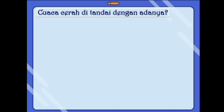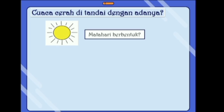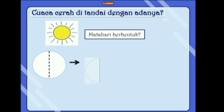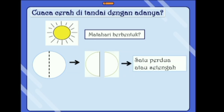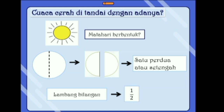Nah teman-teman, cuaca cerah ditandai dengan adanya apa? Ya benar, dengan adanya matahari. Berbentuk apa ya? Ya benar, berbentuk lingkaran. Miss potong ya teman-teman — Miss potong menjadi sama besar. Lingkaran tersebut menjadi 1/2 atau setengah. Lambang bilangannya adalah 1/2.